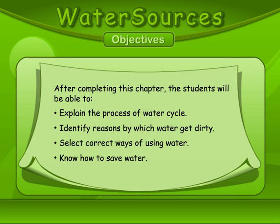After completing this chapter, the students will be able to: explain the process of the water cycle, identify reasons by which water gets dirty, select correct ways of using water, and know how to save water.